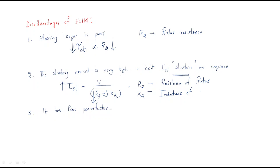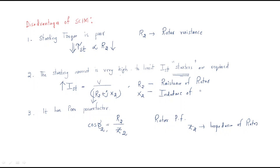The squirrel cage motor also has a poor power factor. The rotor power factor is given by cos φ2 = R2 / Z2, where R2 is rotor resistance and Z2 is the impedance of the rotor. Because of the low rotor resistance, the power factor is poor and needs to be improved. So the disadvantages are: poor starting torque, high starting current requiring starters, and poor power factor.